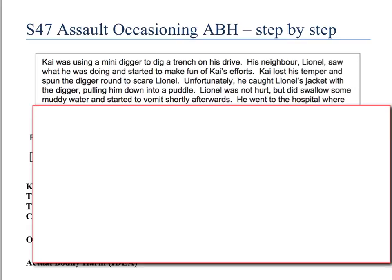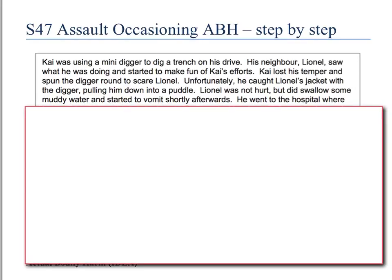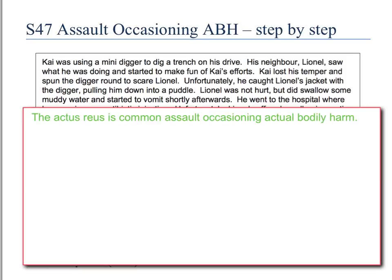Once we've established that, we need to look at how to answer this question step by step to get maximum marks. The first thing is to accurately summarise the whole of the Actus Reus. The Actus Reus for Section 47 is common assault occasioning actual bodily harm, and it has three elements: the common assault — meaning an assault or a battery — the word 'occasioning', which means causes, involving factual and legal causation, and thirdly, actual bodily harm. You've got to deal with all three elements separately: state what each one is, give a case, and apply it to the scenario each time.